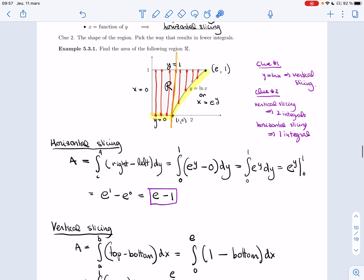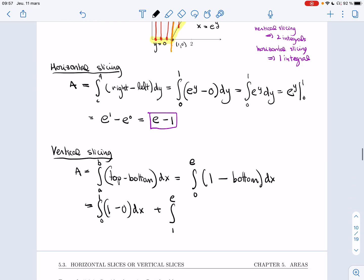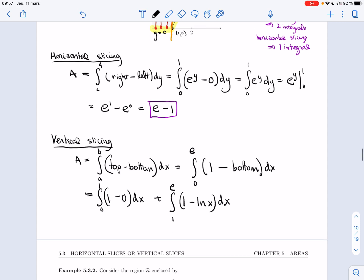And then I have plus the integral from one to e. On this part of the region, top is still one, but bottom is now ln of x. So the first part gives you just one. Second part gives you e minus two.